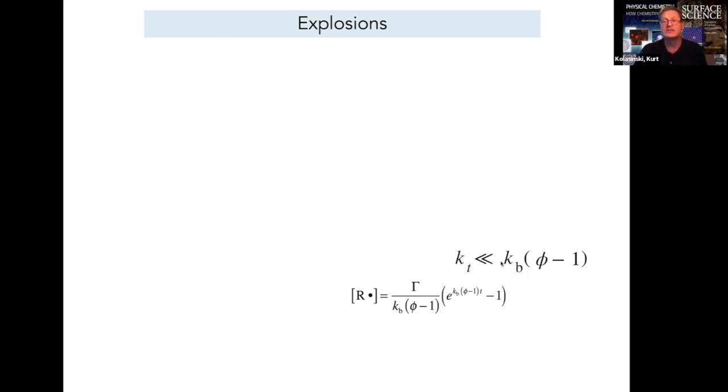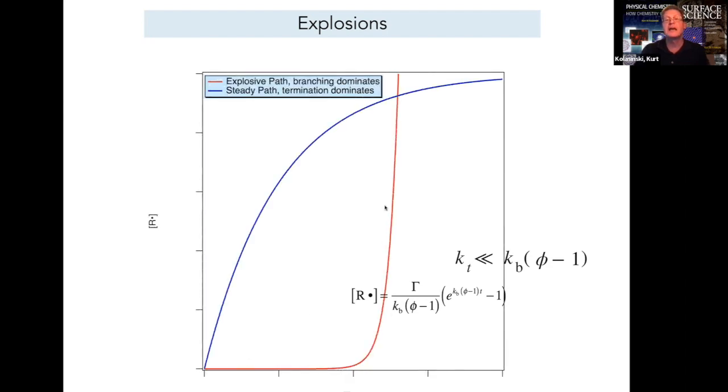When branching dominates, the expression for the concentration of radicals as a function of time leads to an exponential increase in the radical concentration and an explosive path is followed.